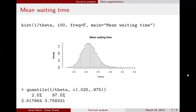We can look at the posterior distribution for 1 over theta, which is the actual mean waiting time in weeks. That mean waiting time is somewhere around 3, and the 95% credible interval is approximately 2.6 to 3.8 weeks. That was the specific example.